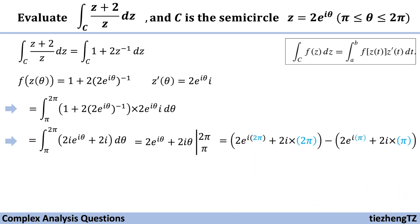So next, substitute 2 pi and pi into the equation separately and do the math again. We know e to the power of i times 2 pi is 1, and e to the power of i times pi is minus 1. So we just substitute and do the math. We can get the final result for this question, which is 4 plus 2 pi i.